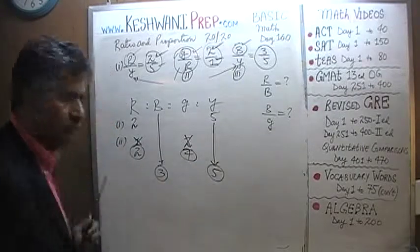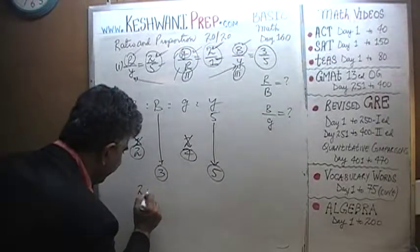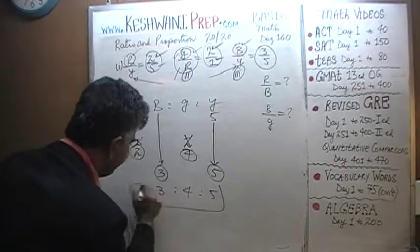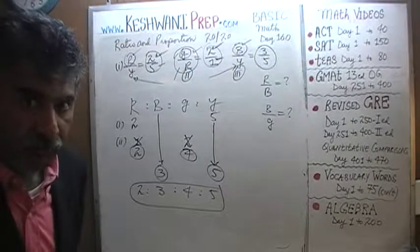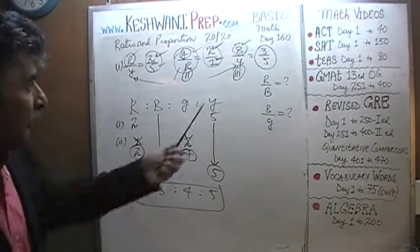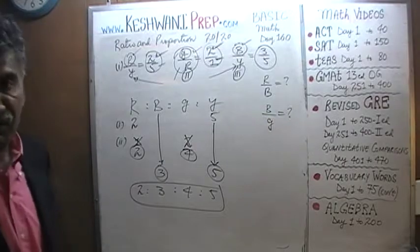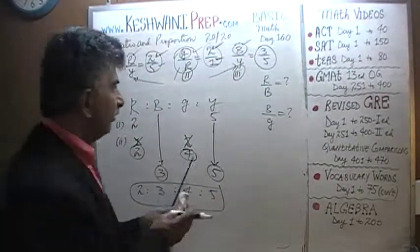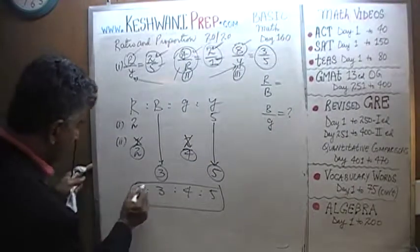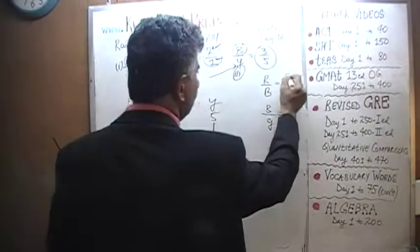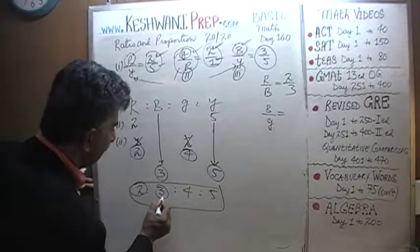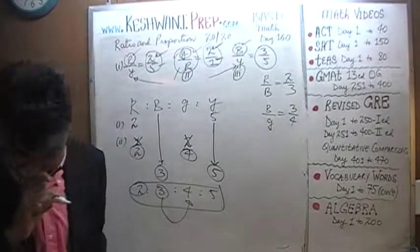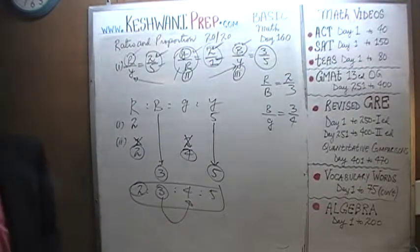The ratios are 2 to 3 to 4 to 5 — red to blue to green to yellow. Now we can answer any ratio they ask for. Red to blue: look right here — red is 2, blue is 3, so red to blue is 2 to 3. Blue to green: blue is 3, green is 4, so blue to green is 3 to 4. Three to four and two to three — that is exactly what we found earlier with the other method. That was another way of doing the same problem.